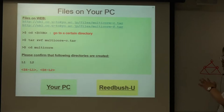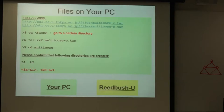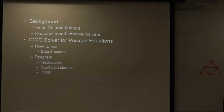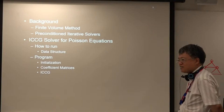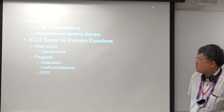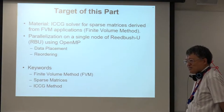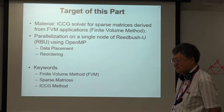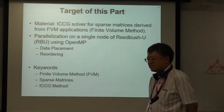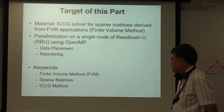You have already downloaded the code on your PC. I'll give a brief overview of the finite volume code. You already learned the introductory part of the finite volume method last Wednesday, so I will skip some details. The target of this part is an ICG solver for sparse matrices derived from finite volume applications, with parallelization on a single node using OpenMP. Key words are: finite volume method, sparse matrices, and ICG.